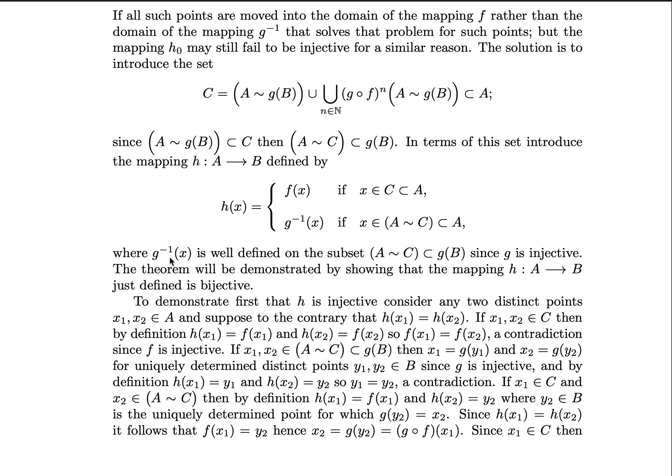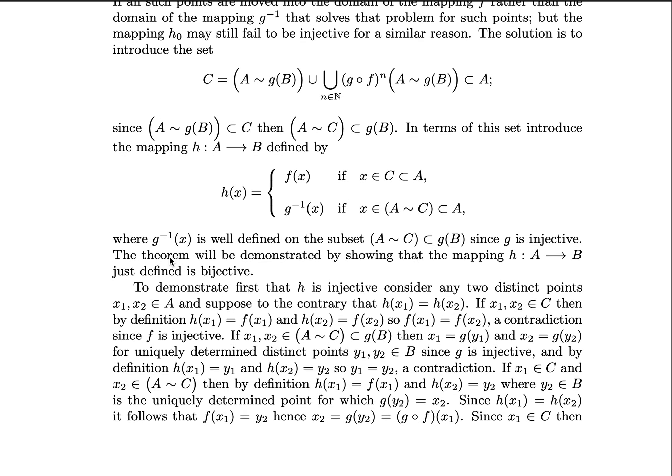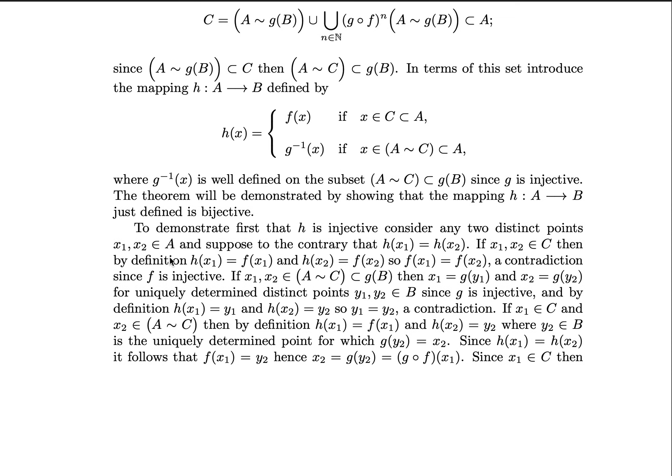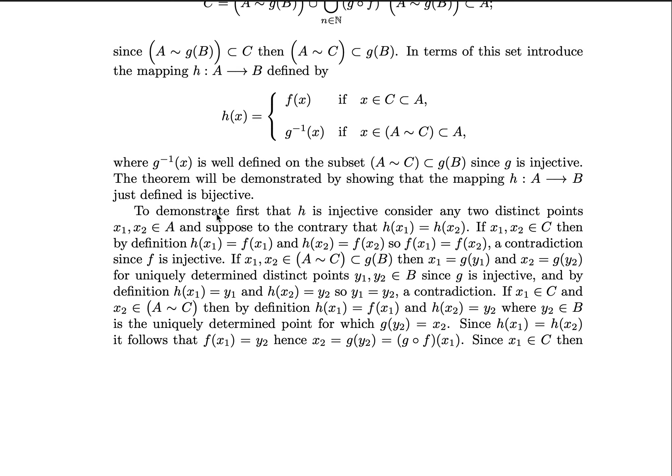As noted, g inverse of x is well defined on the subset A except for C since g is injective. And then this theorem will now be demonstrated by showing that this mapping just defined is bijective. It's kind of defined in our construction, but we can prove it more explicitly as follows.